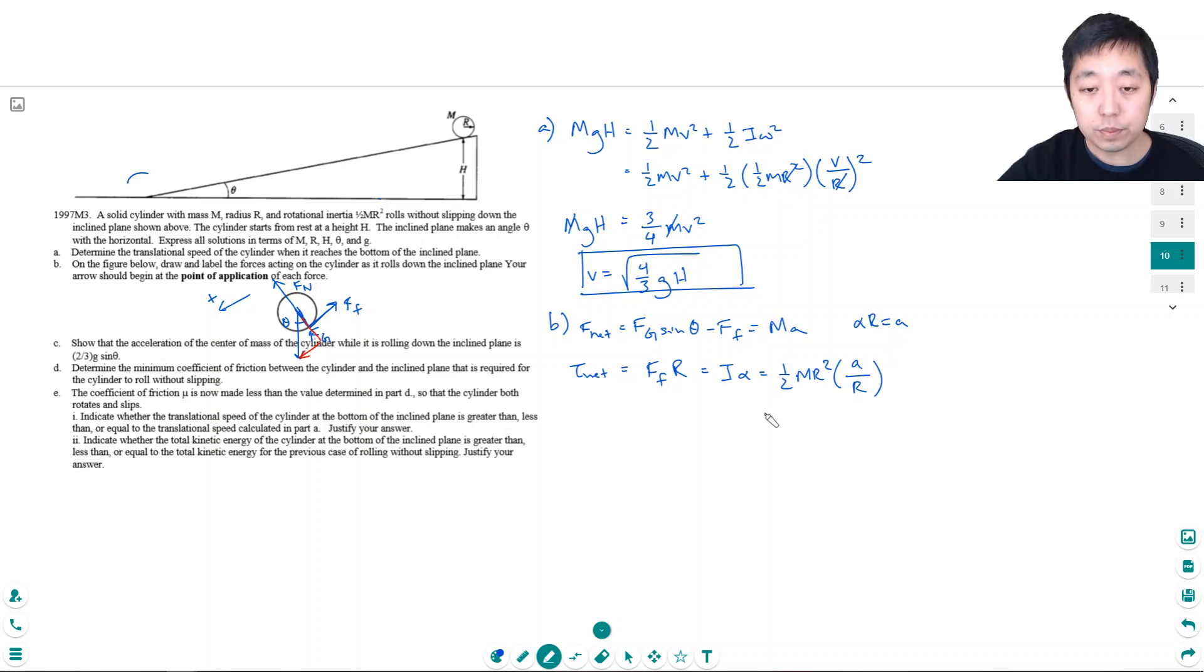So a over r is alpha. These r's cancel, so I have force of friction times r is equal to one half m a r. The r's cancel, so force of friction is one half ma. Now I can... I want to find what the acceleration is, so I'm going to replace the force of friction with one half ma. So I'm going to have Fg, which is mg sine theta, minus one half ma is equal to ma. I add that, the m's cancel if I sort of cancel everything out. So I have g sine theta. One half a plus a is three halves a, so a is equal to two thirds g sine theta. And that's what they wanted us to show.